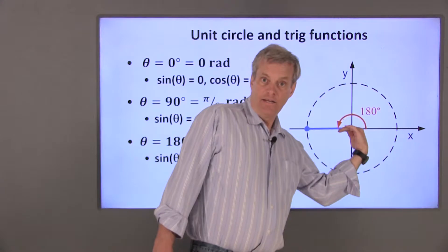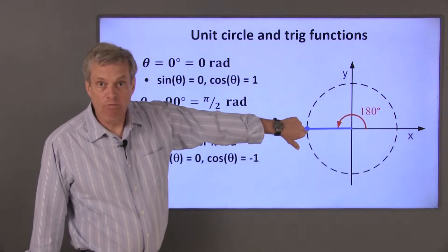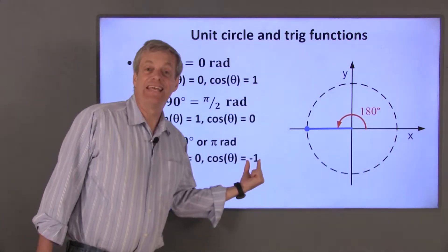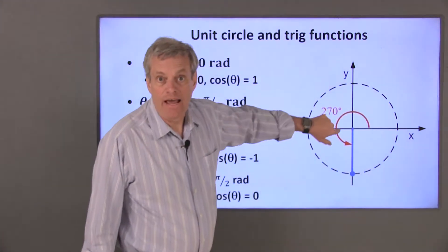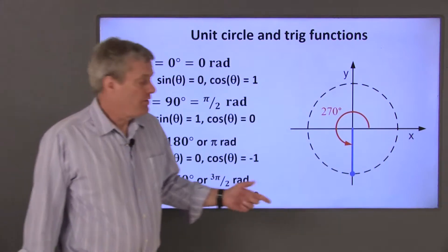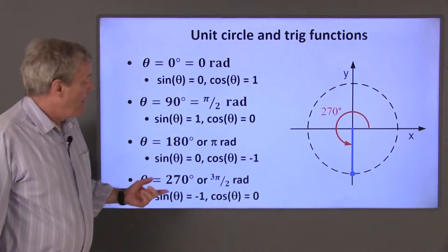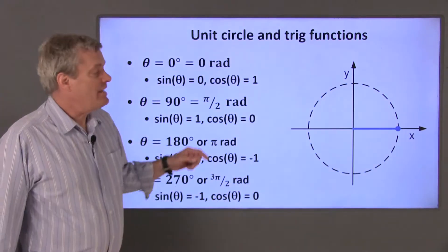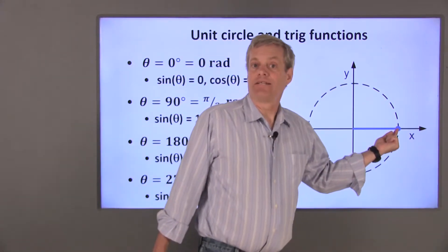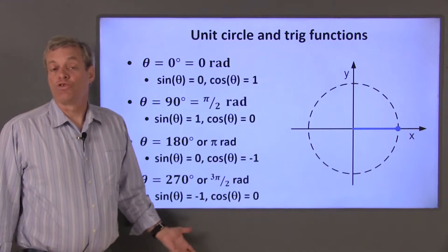If I increase the angle by another 90 degrees, the angle is 180 degrees or pi radians. The x value for this condition is negative 1, and the y value is 0, so the sine of 180 degrees is 0 and the cosine of 180 degrees is negative 1. Adding another 90 degrees gives an angle of 270 degrees or 3 pi over 2 radians from the positive x axis. At this angle, the point on the unit circle has an x value of 0 and a y value of negative 1, so the sine of 270 degrees is negative 1 and the cosine of 270 degrees is 0. If I increase the angle by another 90 degrees, theta becomes 360 degrees, and the point on the unit circle gets back to the same point as theta equals 0 degrees. The sine and cosine functions repeat themselves every 360 degrees or 2 pi radians.